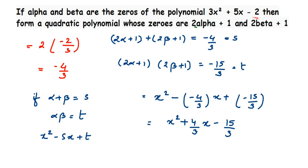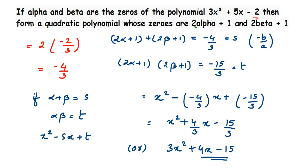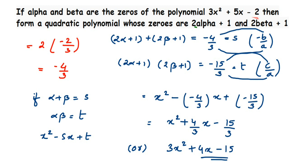You can also write this using the form where alpha plus beta equals minus b by a and alpha into beta equals c by a. Comparing values — in place of minus b we have minus 4, a is 3, b is 4, c is minus 15 — you get 3x squared plus 4x minus 15. Substituting back into ax squared plus bx plus c gives the same expression.